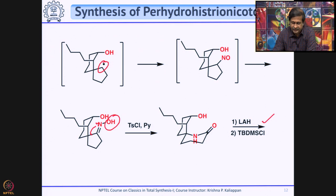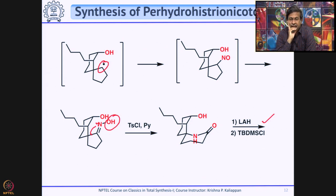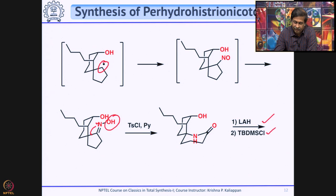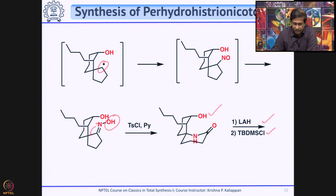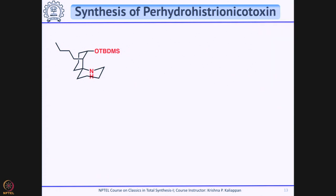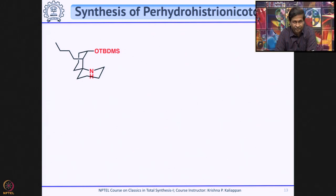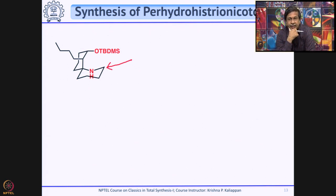The next two steps: first, treatment with LiAlH4 reduces the lactam to give the corresponding amine — the carbonyl group is completely removed. Then the free hydroxyl is protected with TBDMSCl to give the OTBS-protected compound. Now what remains is to introduce the 5-carbon unit at the carbon bearing the imine, and the 5-carbon unit must come from the equatorial side.